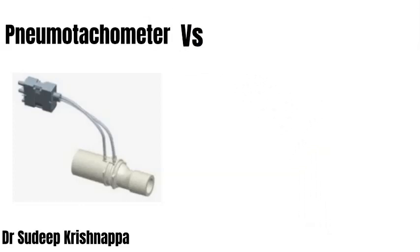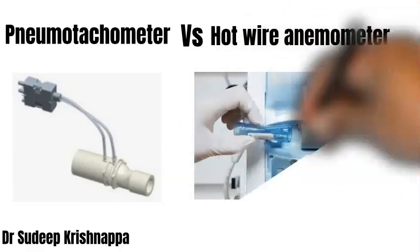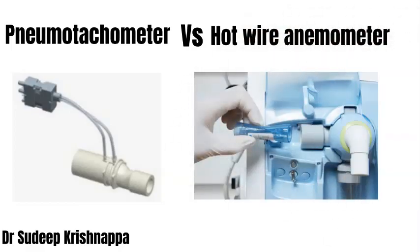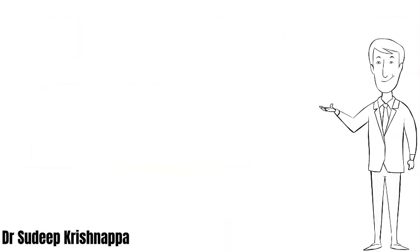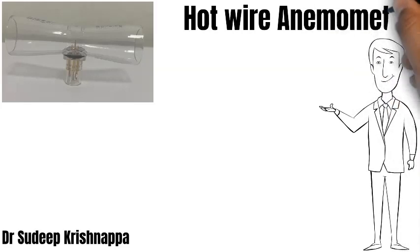Because the Drager machines use a hot wire anemometer, certain precautions have to be taken in some of the older Drager workstations like Drager Fabius or Fabius Plus when desflurane is being used. The picture in the next slide is a side-on view of the hot wire anemometer flow measuring device used in the Drager anesthesia machines. This device is interposed along the path of the gas flow.